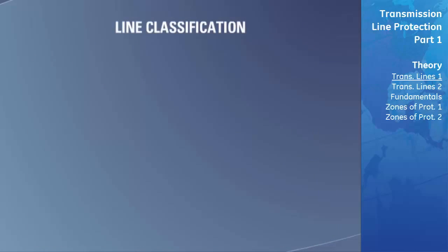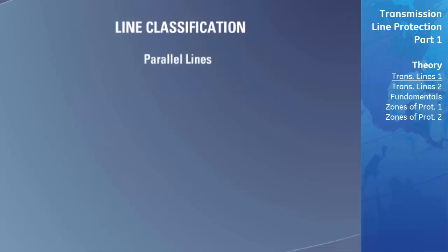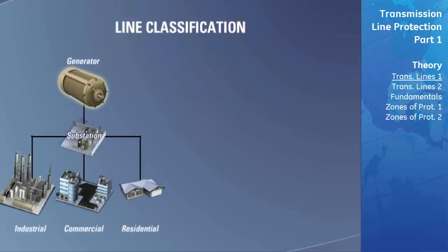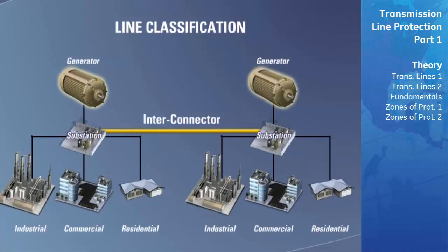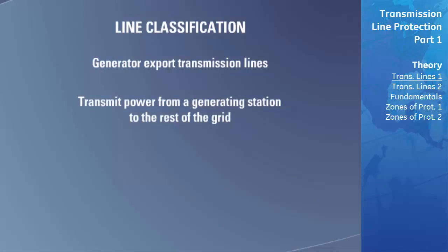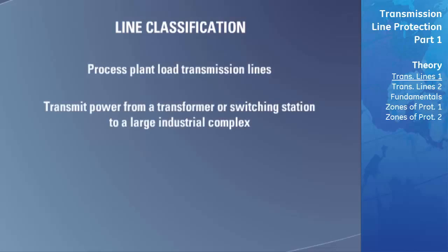Transmission lines can be broken down into one of four main classifications that describe their configuration, the function they perform, and their location in the system. Parallel lines describe a configuration where multiple transmission lines run side by side, done to transmit large amounts of power and provide a redundant path in case one line is shut down due to a fault. Interconnector transmission lines connect one section of a power system to another. Generator export lines transmit power from a generating station to the rest of the grid. Process plant load lines transmit power from transformers or switching stations to large industrial complexes.